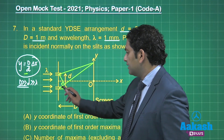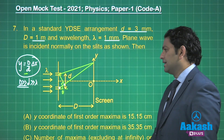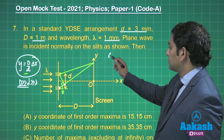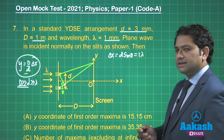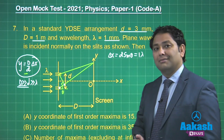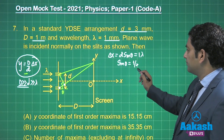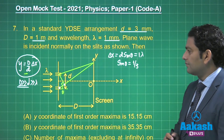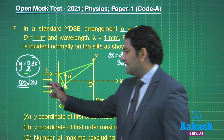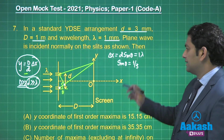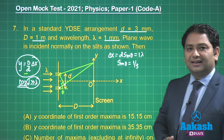Calling this angle theta, the path difference is d sine theta. Setting it equal to one lambda for the first maxima, we get sine theta equals one by three. Now do you realize this theta is not small? That is exactly the point — when small d is comparable to lambda, theta is not negligibly small, and you cannot equate sine theta to tan theta.